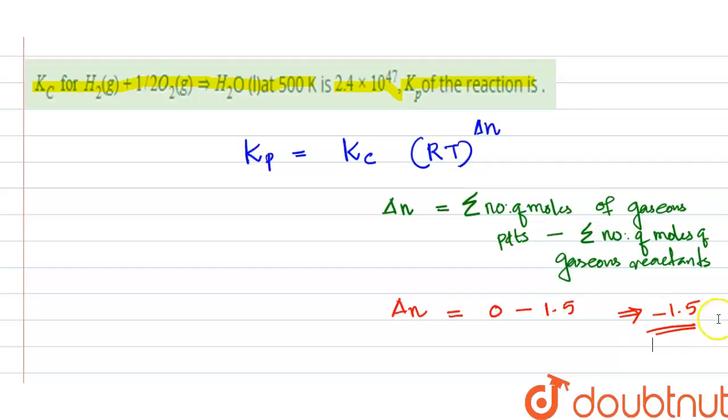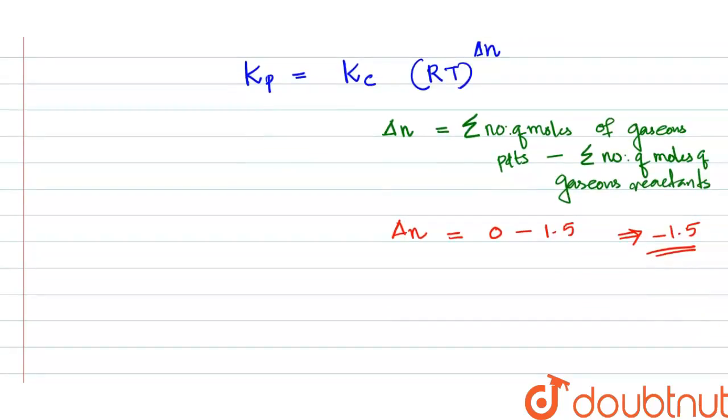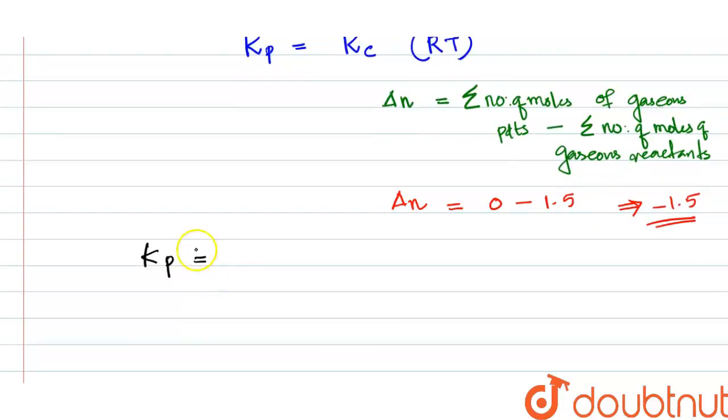So delta n is -1.5. Now let's substitute those values. Kp equals Kc, which is 2.4 × 10^47,